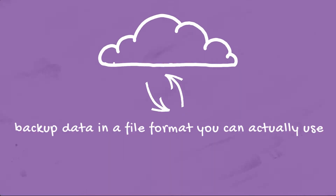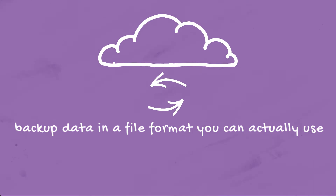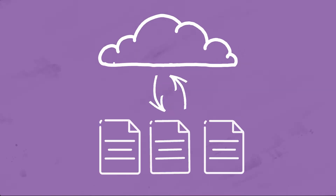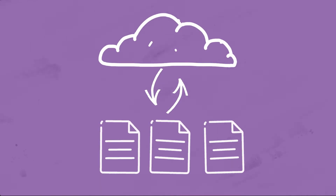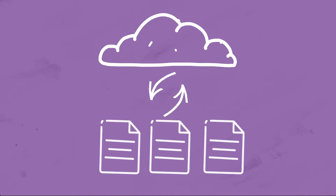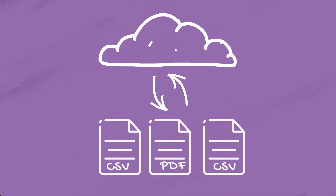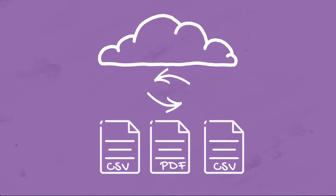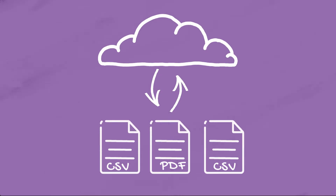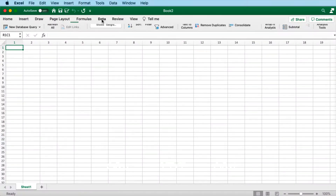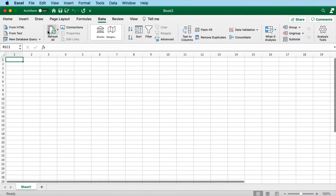Another aspect of data backup is in what format your backup is stored. It is important that your data is saved in a file format you can actually use. For example, if you save data in CSV format, the data can be read years from now and can be opened in any text editor or spreadsheet software.